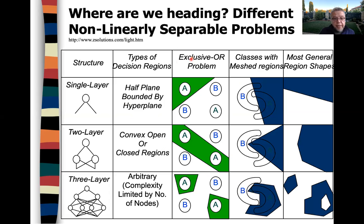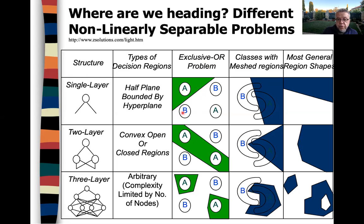So where are we heading? With a single layer, the most general region shape we can have is a half plane bounded by a hyperplane. We cannot solve the XOR problem — we cannot divide or separate two classes using just a single layer. Similarly, if we have classes with meshed regions, we cannot use a single layer for those either.